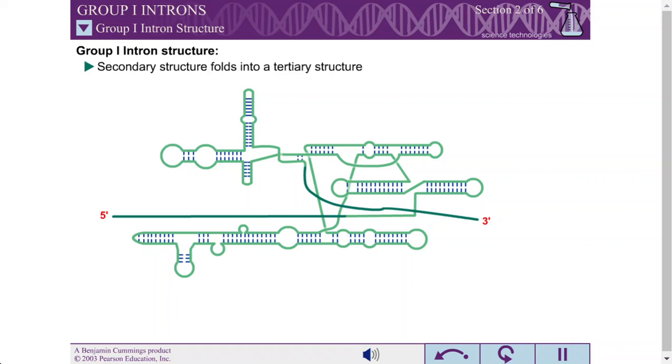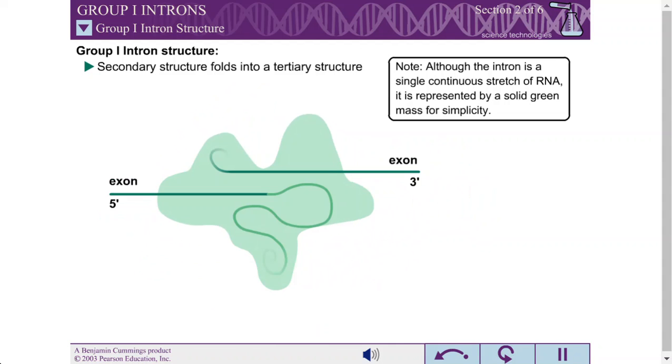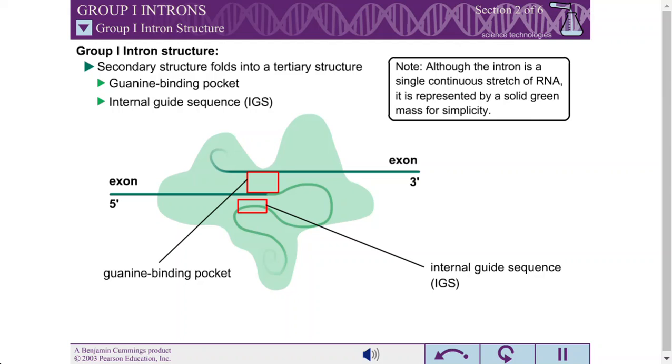This secondary structure can further fold into a tertiary structure. This tertiary structure contains two important features: a guanine binding pocket and an internal guide sequence.